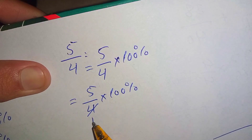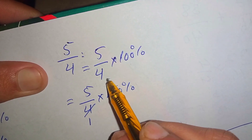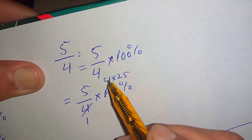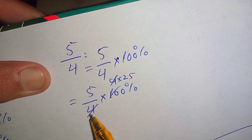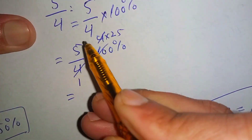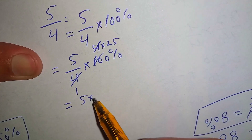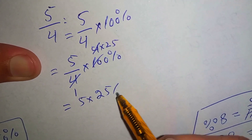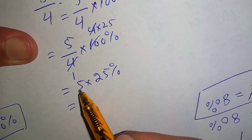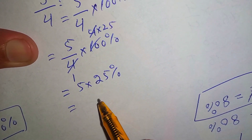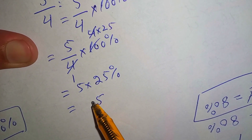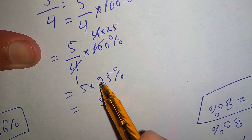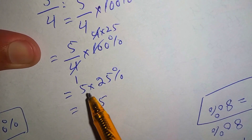4 times 25 is 100, so we cancel out this 4 with this 4 and write the remaining terms: 5 times 25 percent. Now we multiply: 5 times 5 is 25, write the 5 and carry the 2; 5 times 2 is 10, plus 2 is 12.